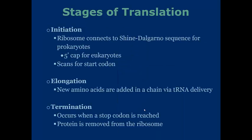We'll go into what each site does when we talk about the steps of translation. Let's go into those stages. The first stage is the initiation of translation. The ribosome connects to the Shine-Dalgarno sequence for prokaryotes, and it will attach to the 5' cap for eukaryotes. Remember that prokaryotes don't have these sorts of post-transcriptional modifications. After it attaches to these sequences or the 5' cap, it'll scan for the start codon. Once it finds the start codon, then the initiation factors will associate with the ribosome and therefore start translation.